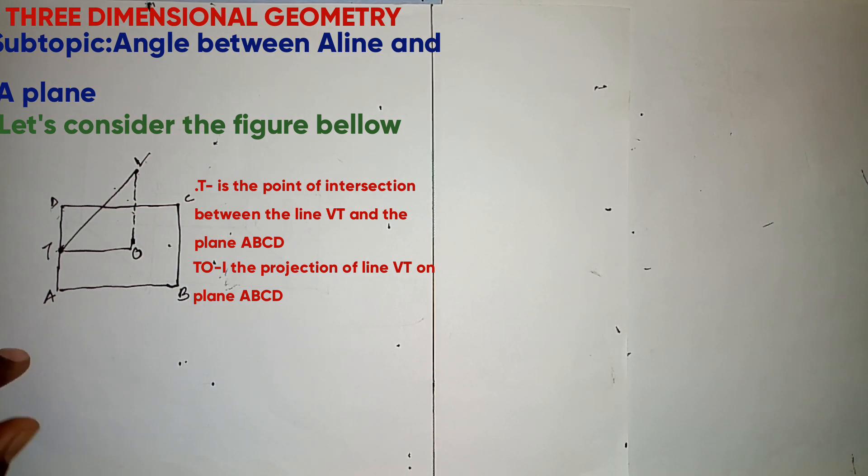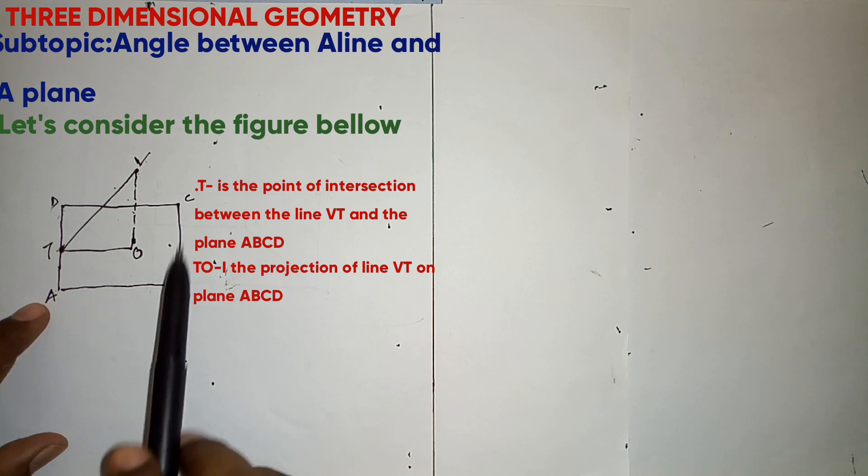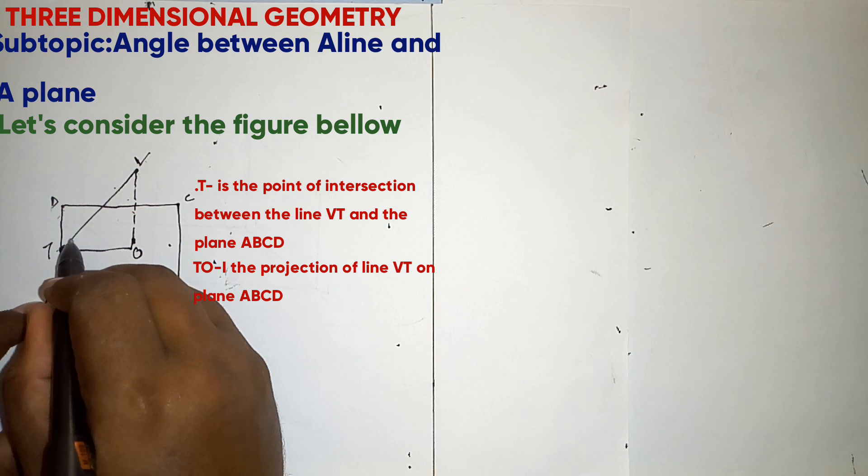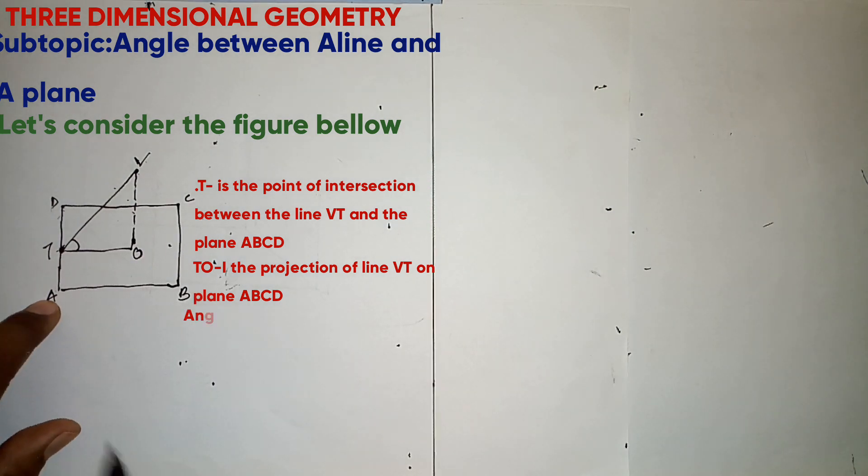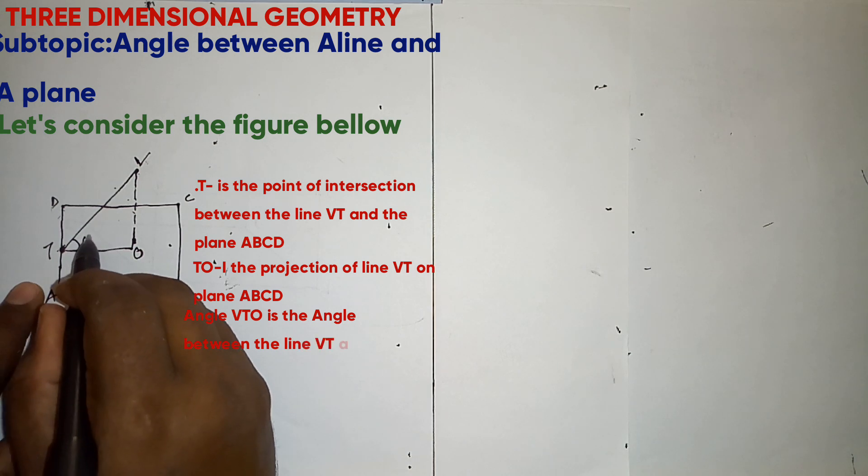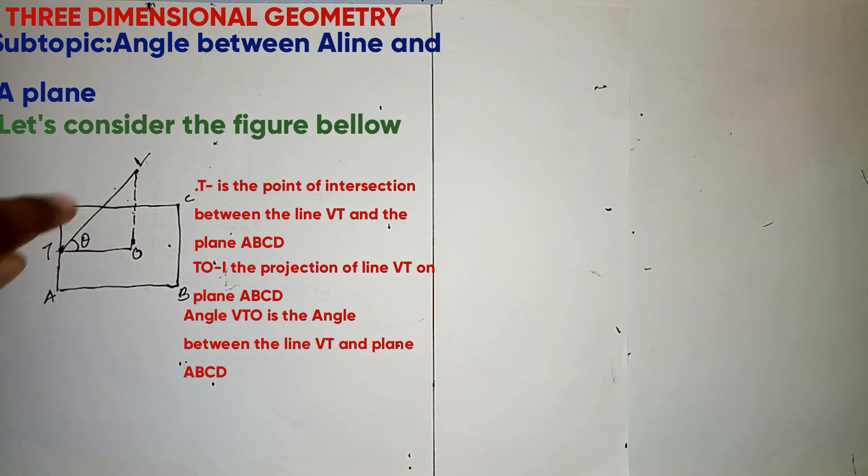Now the angle between the plane ABCD and the line TV will be the angle VTO. So that angle beta will be the angle between the line VT and the plane ABCD.